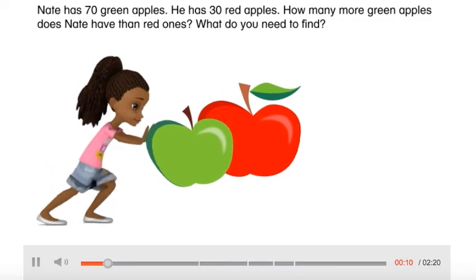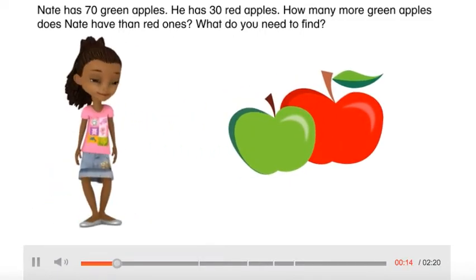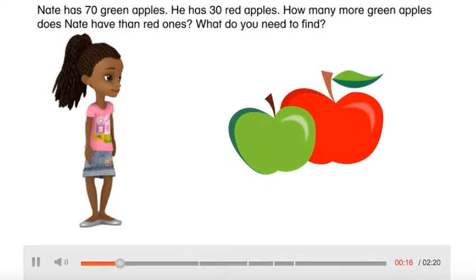Nate has 70 green apples. He has 30 red apples. How many more green apples does Nate have than red ones?